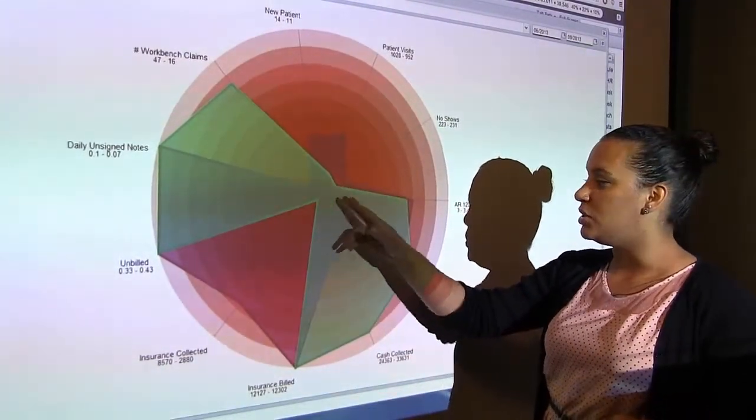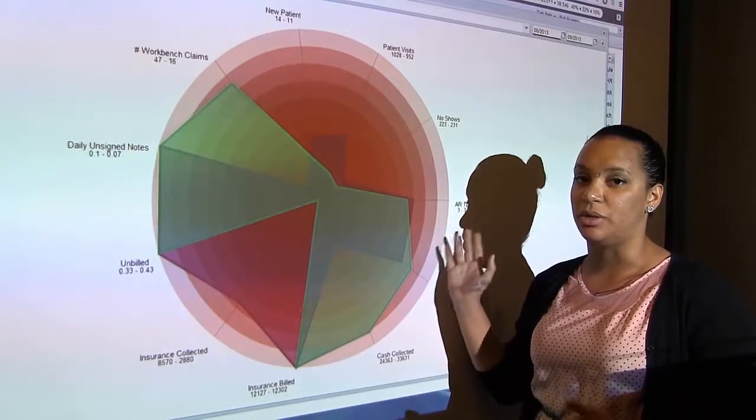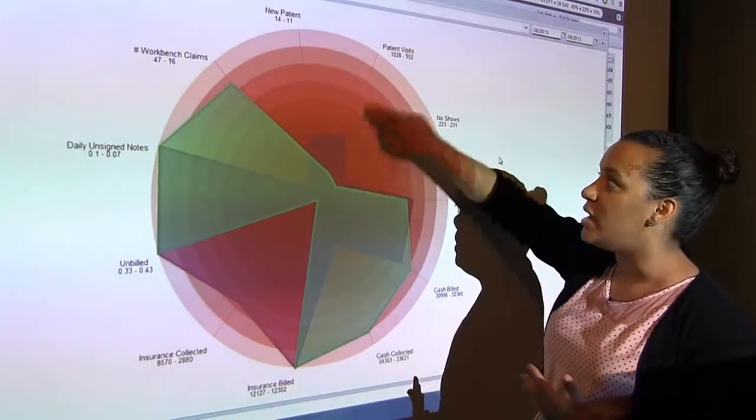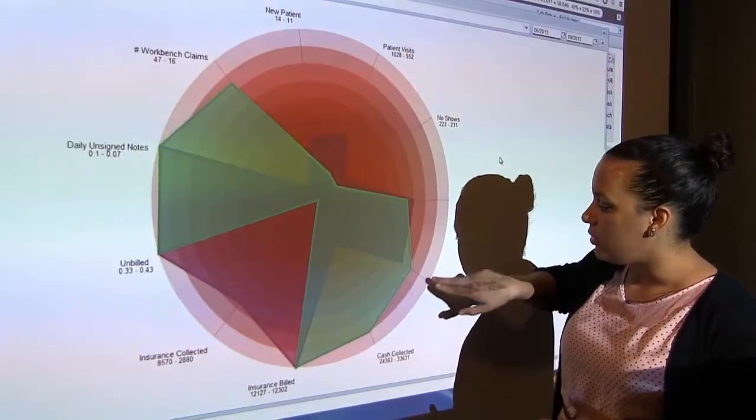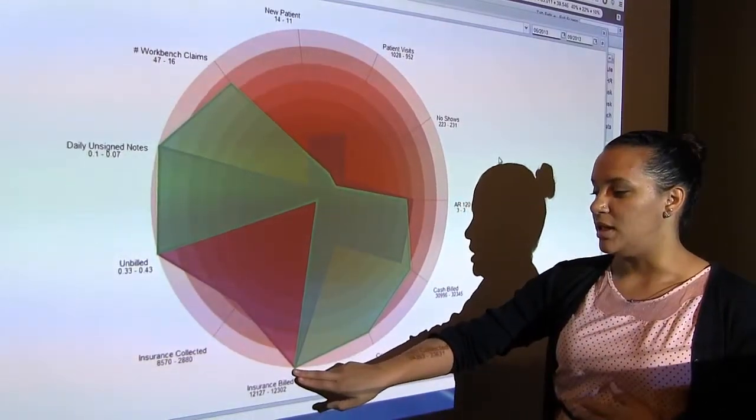So the closer you are to the outside, the closer you are to their goal. As you can see, they're not close to their goal here, which is why the green is so far from the edge, whereas over here they're really close, and here they have actually met their goal.